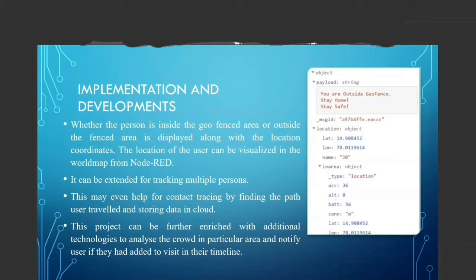This project can also be further developed with additional enriched technologies. For example, if the user has added tasks they want to do after a few hours or days, based on geographical conditions we can alert the user. If they plan to visit a particular place at a certain time, and our analysis shows there will be more crowd in that area at that moment, we can notify the user to change the timeline of the task to another time — not only saving their life but also reducing crowd in that area if more people use this application.